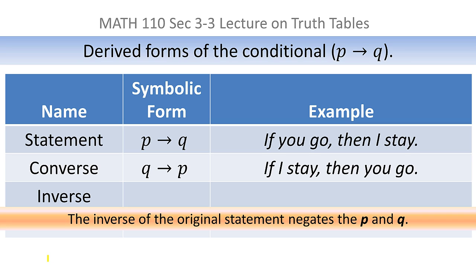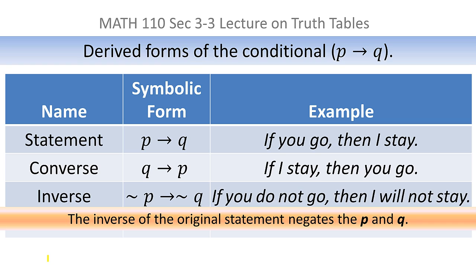There's also a form called the inverse. The inverse of the original statement negates p and q — it doesn't switch them, it negates them. So if the original statement were p implies q, the inverse would be 'not p implies not q.' Using our example, if the original were 'if you go then I stay,' the inverse would be 'if you do not go then I will not stay.'